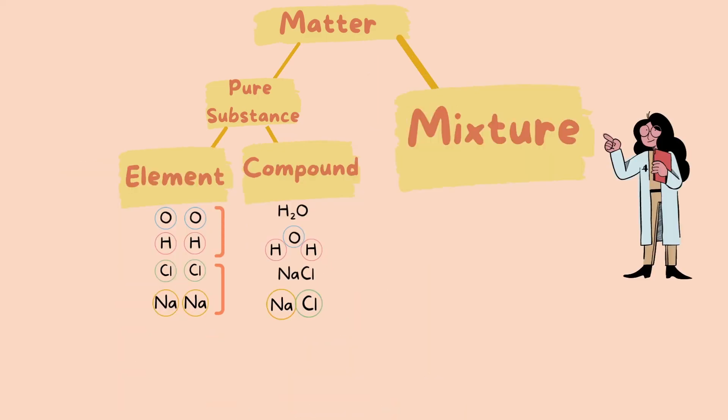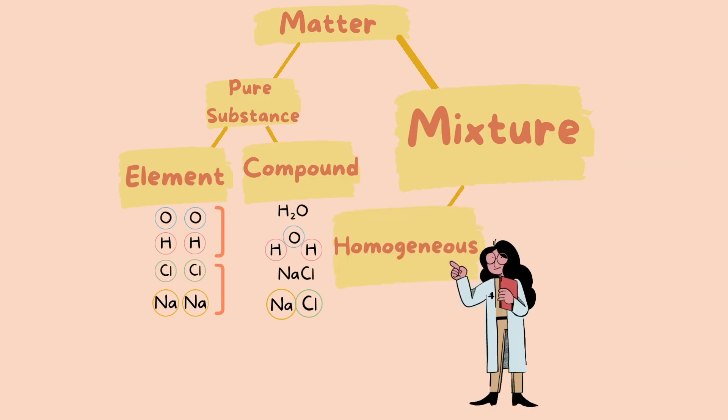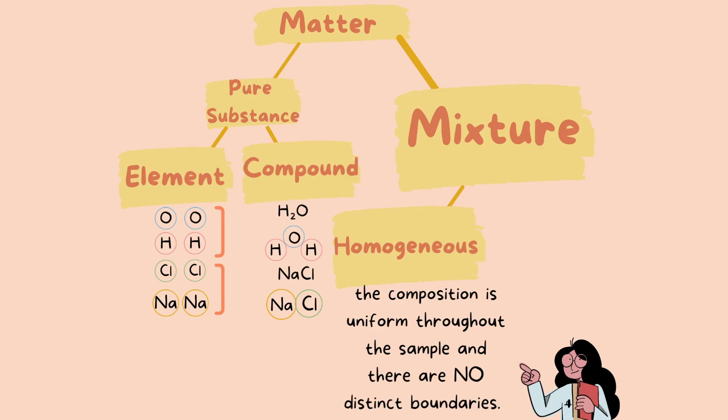So remember that a mixture is two or more substances mixed together. In a homogeneous mixture, the composition remains the same in the entire sample. Or we can say that the composition is uniform throughout the sample. Also, there are no distinct boundaries, meaning you cannot easily see the substance separate from each other. Instead, all the substances are blended together.